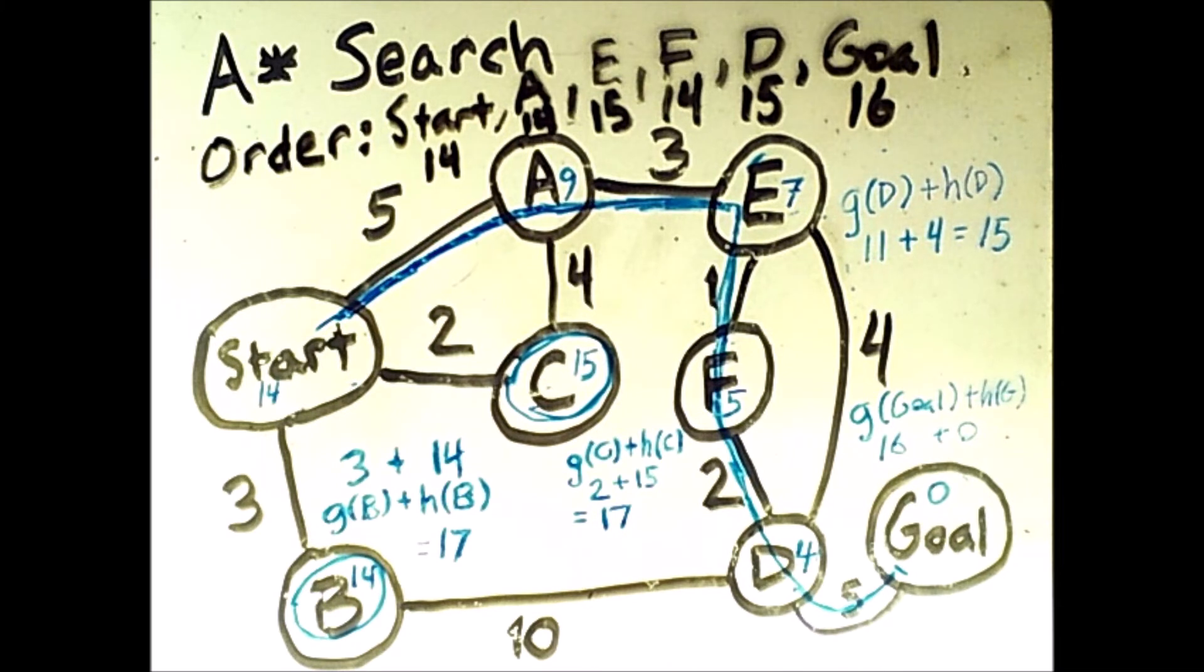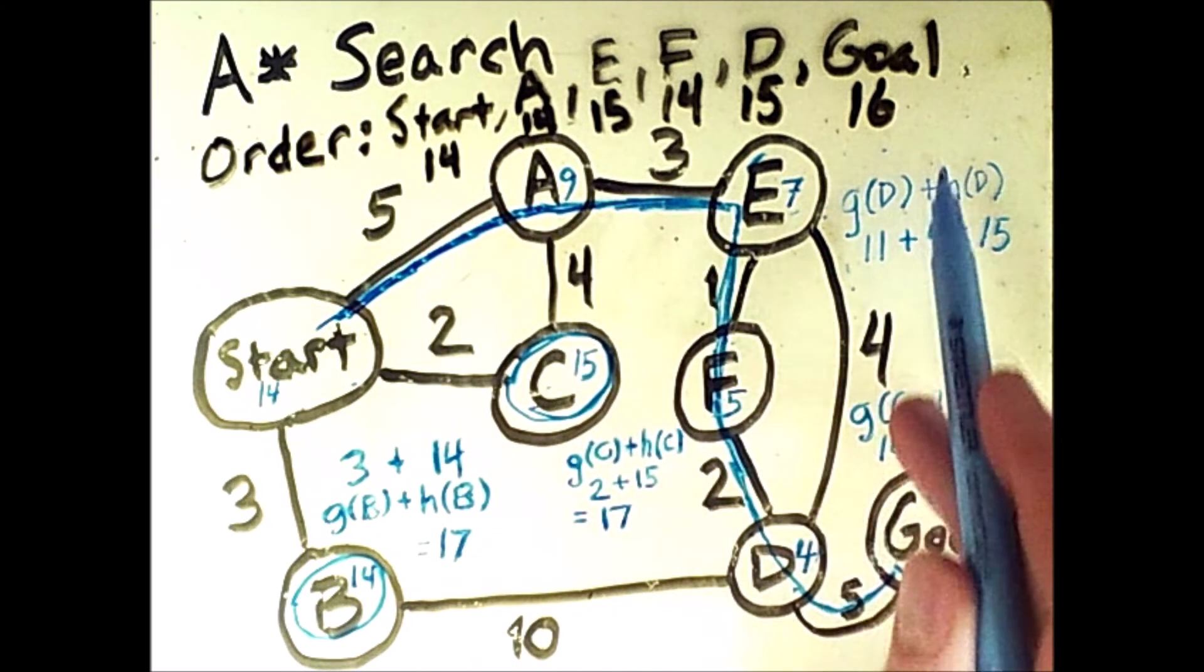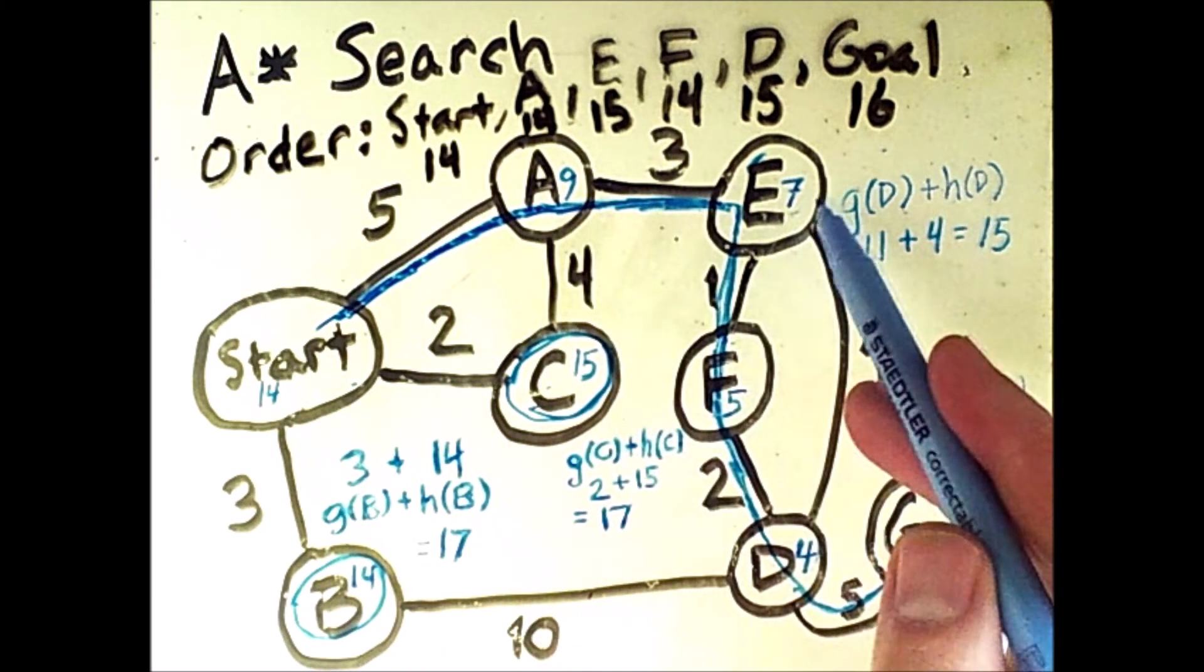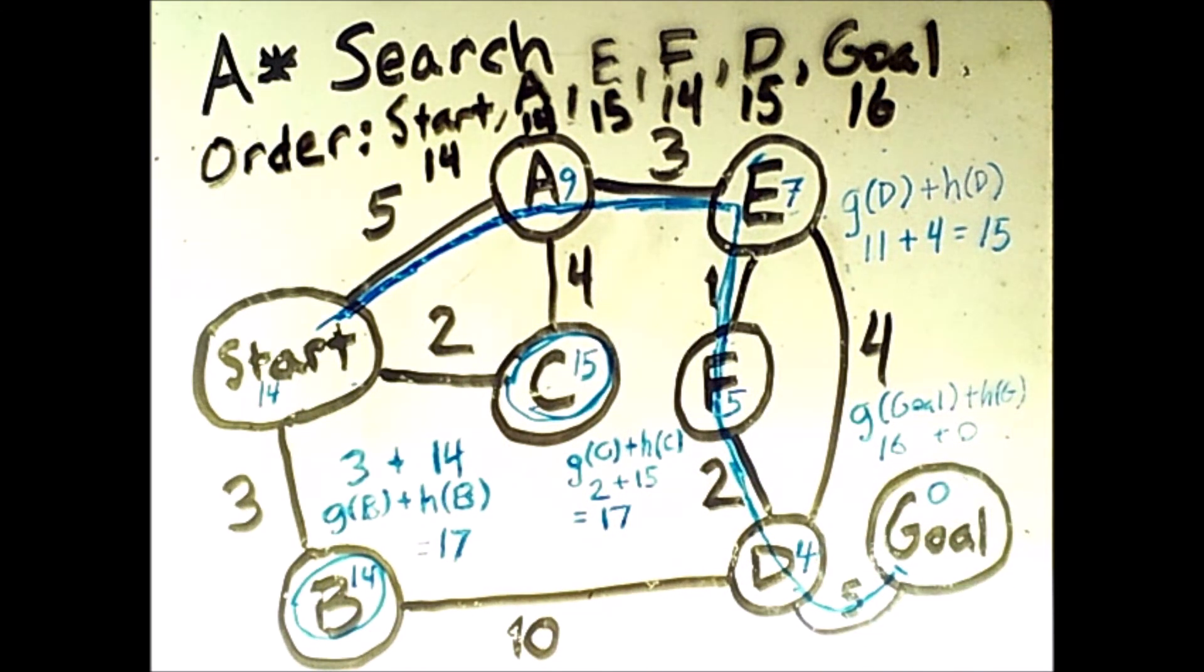We never wasted any time searching b or c. And it turns out that the states we searched are also the optimal solution. The optimal solution is to start here and to go to a, then e, then f, then d, then the goal. So by using this particular heuristic, we went directly from the start to the goal without any sidetracking or backtracking, which is really the best result you could possibly expect.